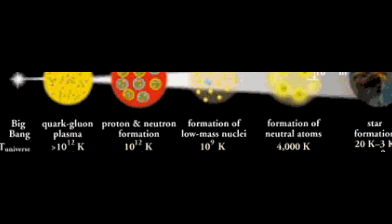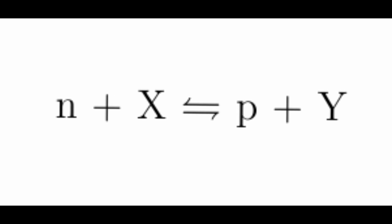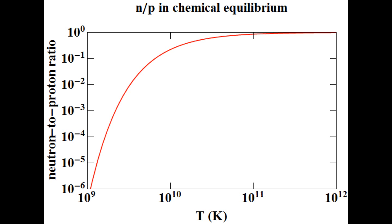Protons and neutrons are collectively called nucleons. At first, the protons and neutrons were in chemical equilibrium with each other. This means that protons and neutrons were turning into each other at such a high rate that the fraction of nucleons that were protons and the fraction that were neutrons was entirely determined by the temperature. Because neutrons have a slightly higher mass than protons, there will always be more protons than neutrons in chemical equilibrium. The lower the temperature, the higher will be the fraction of nucleons that are protons. When neutrons and protons first came into existence, the temperature was so high that approximately half of the nucleons were neutrons, and half were protons.